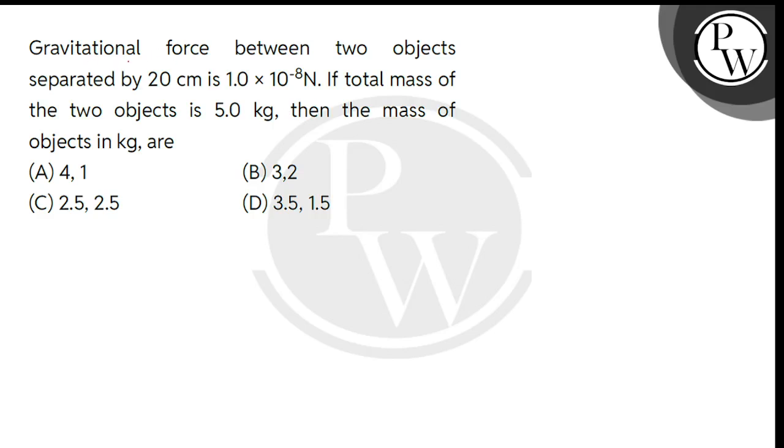Hello children, let's read the question. Gravitational force between two objects separated by 20 cm is 1 multiplied by 10 to the power minus 8 N. If total mass of the two objects is 5 kg, then the mass of objects in kg are.